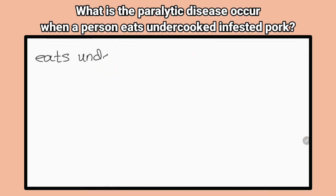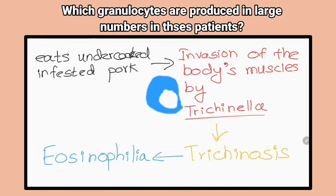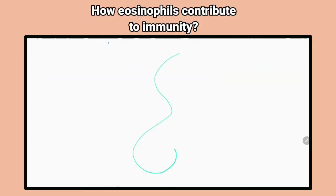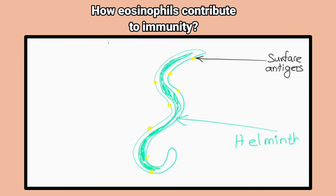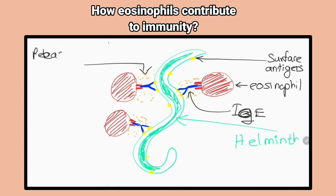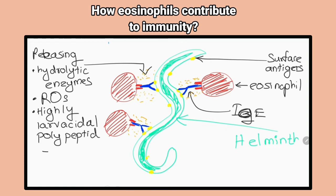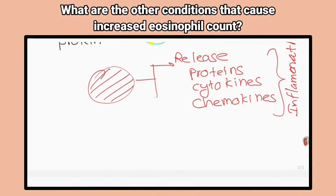What is the parasitic disease that occurs when a person eats uncooked infested pork? Trichinosis. Which granulocytes are produced in large numbers in patients with parasitic infections? Eosinophils. How do eosinophils contribute to immunity? They attach themselves to juvenile forms of the parasite and kill them by releasing hydrolytic enzymes and reactive oxygen species. They release proteins, cytokines and chemokines that produce inflammation.